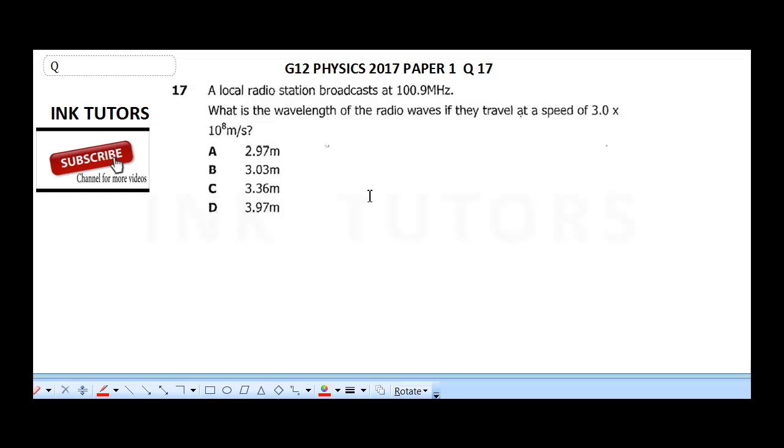Now, this has to do with sound and speed of sound. The first thing you need to remember is V is equal to F lambda, where F is your frequency, V is your speed of light, and lambda is your wavelength.